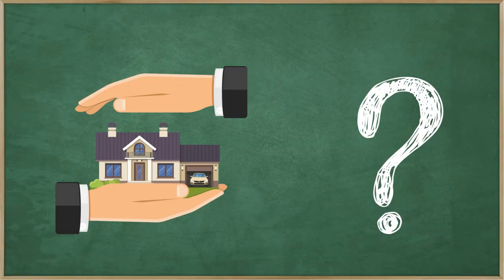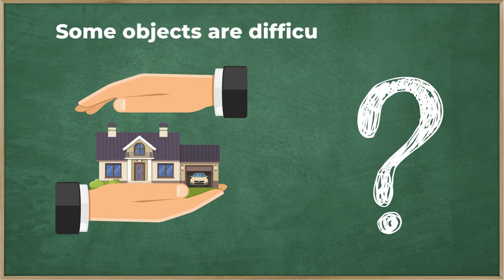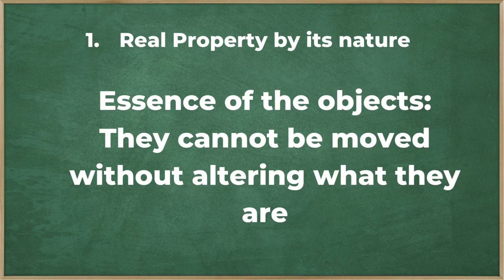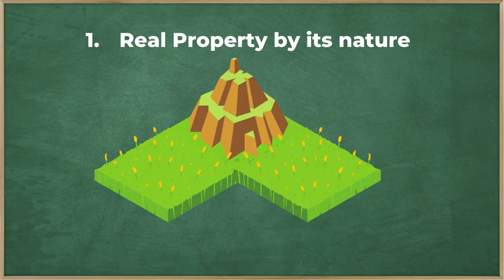Sometimes it is not that easy to identify real property, and some objects can be confusing to classify. Just keep in mind these four ways to determine real property. Number one: real property by its nature. This has to do with the essence of the objects. Real property by nature cannot be moved without altering what it is. This is the most basic category of real property, and it includes land and buildings.